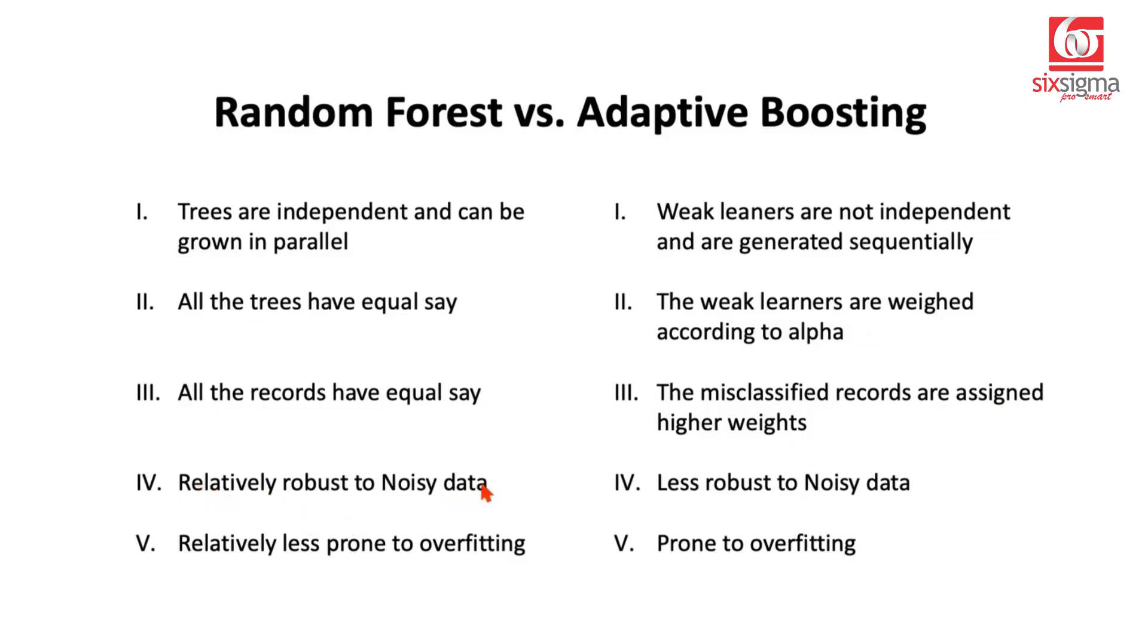Now random forest is relatively more robust to noisy data. We are not saying that it's totally robust, but relatively more robust to noisy data. But adaptive boosting is comparatively less robust to the noisy data. Why? Because it will try to even learn from the noisy records. If those are misclassified, it'll try to give them a weightage too.